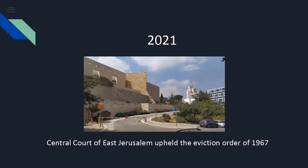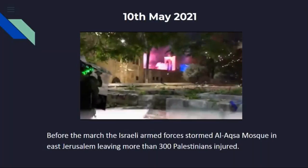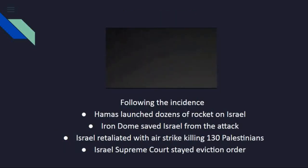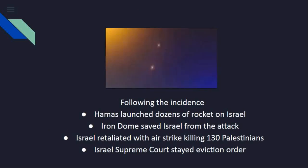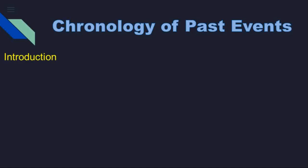On that same day, 7th May 2021, the Israel police clashed with the protesters. The Zionist nationalists had planned a march to commemorate Israel's capture of the eastern half of Jerusalem in 1967, but before that the Israel armed forces stormed Al-Aqsa Mosque in East Jerusalem, leaving more than 300 Palestinians injured. Following these incidents, Hamas launched dozens of rockets on Israel, but Israel's Iron Dome saved Israel from the attack. Israel retaliated with airstrikes killing 130 Palestinians including children.